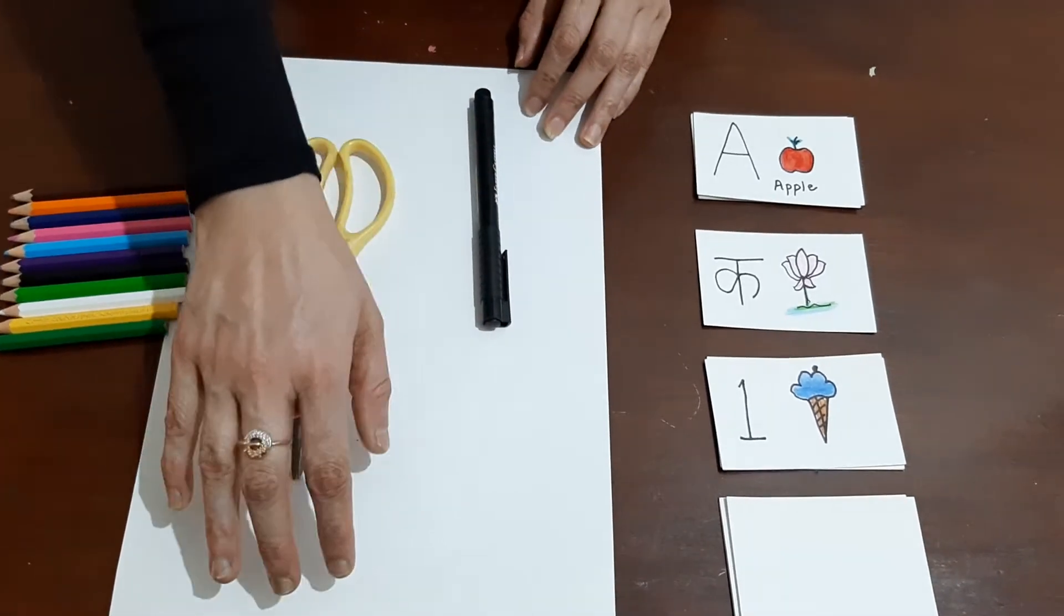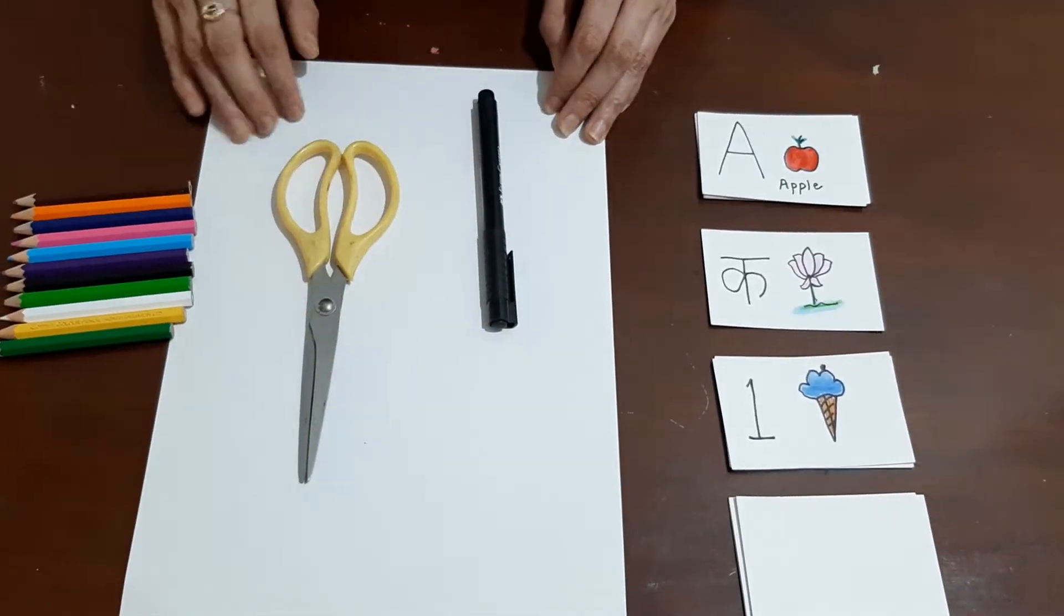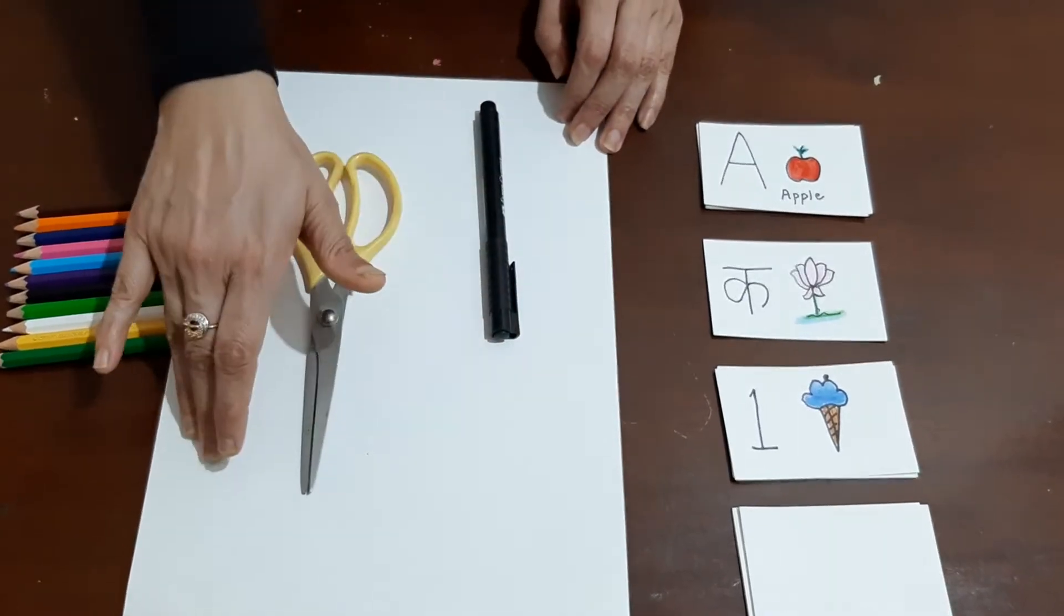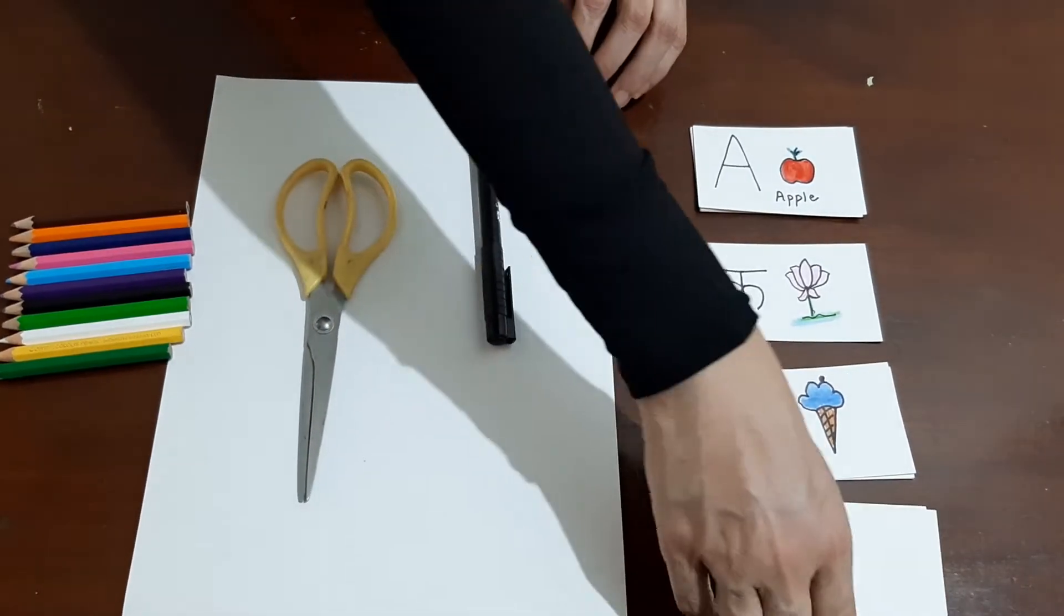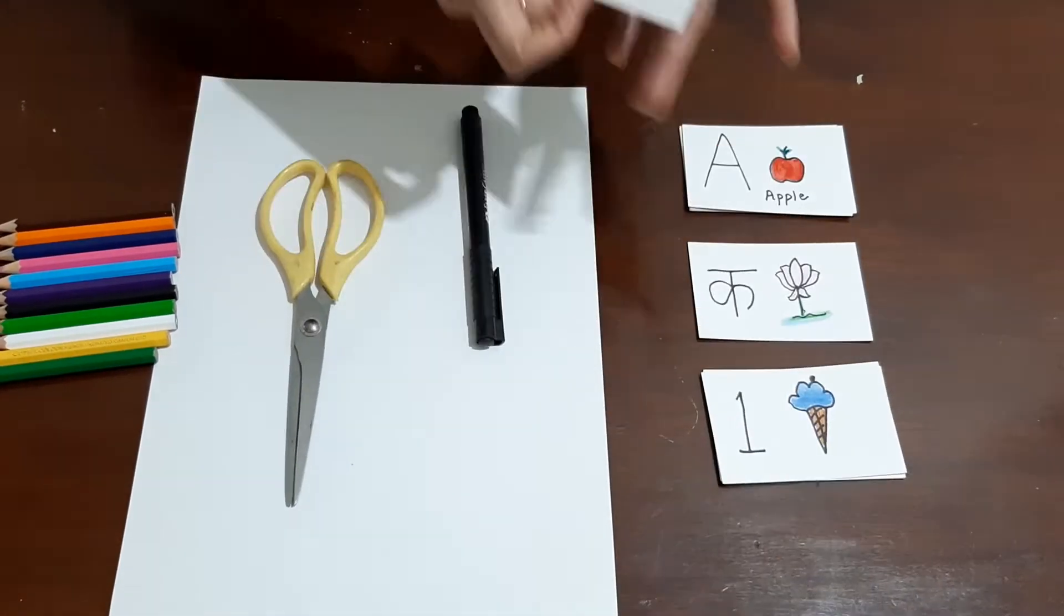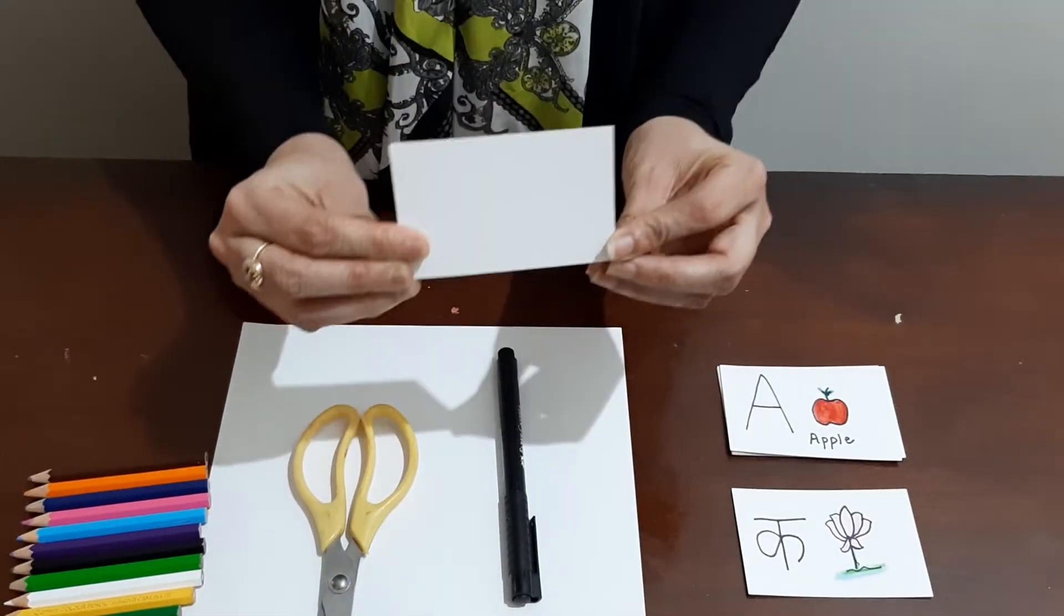Now for this, what we have to do is you can cut this A4 size paper into squares or rectangles of equal size. You can make a grid and cut them. I have already done this for you, like this.